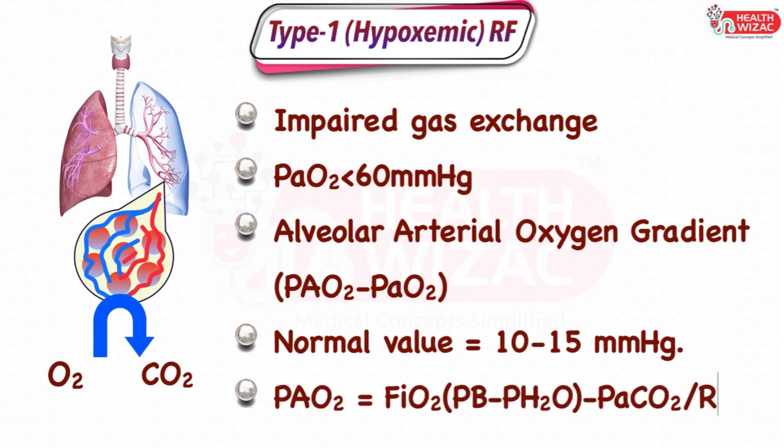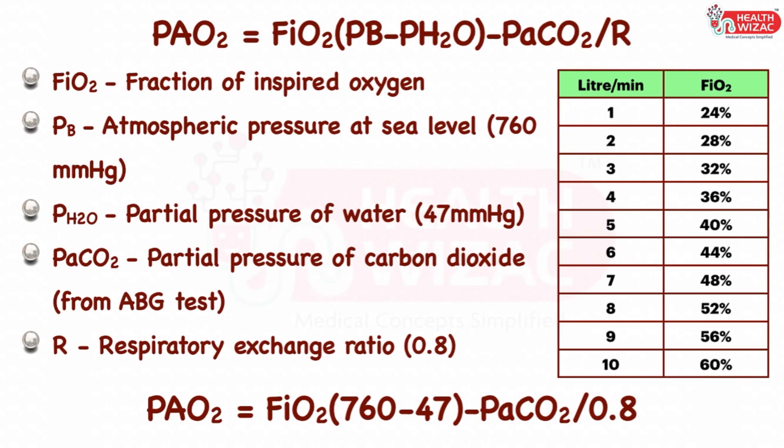PAO2 is calculated by the equation: FiO2 multiplied by (Pb minus Ph2O) minus PaCO2 divided by R. Where FiO2 is the fraction of inspired oxygen, Pb is the atmospheric pressure at sea level which is 760 mmHg, Ph2O is the partial pressure of water which is 47 mmHg, PaCO2 is the partial pressure of carbon dioxide, and R is the respiratory exchange ratio which is 0.8.